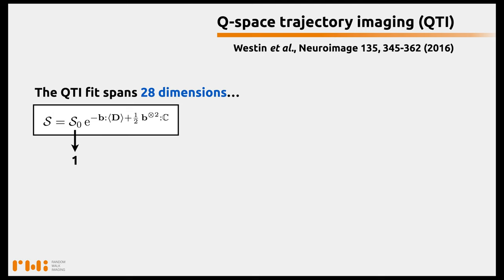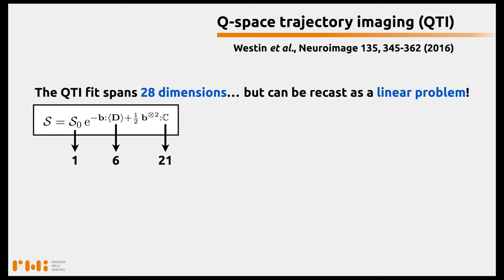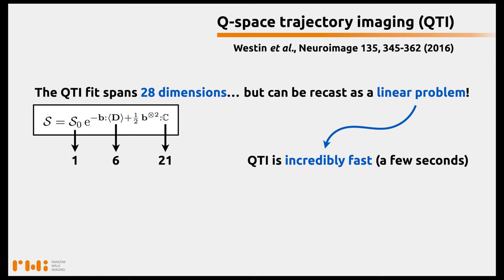The QTI fit spans 28 dimensions: one dimension for S0, six independent elements of the average diffusion tensor of the voxel content, and 21 independent elements in the covariance tensor. However, this fit can be recast as a linear problem, which makes it incredibly fast.